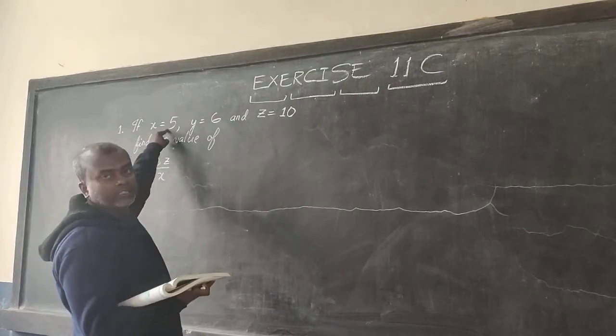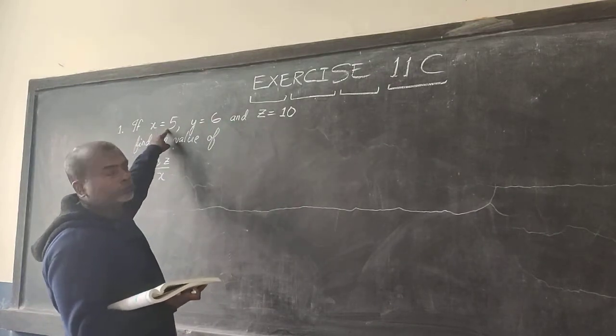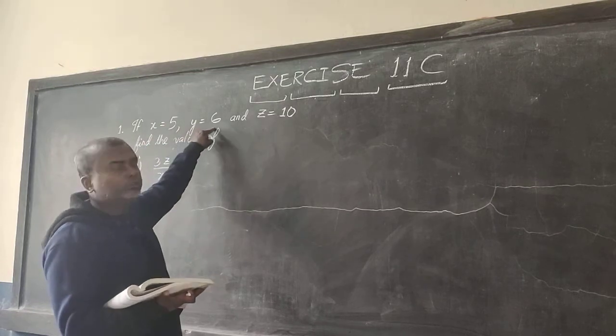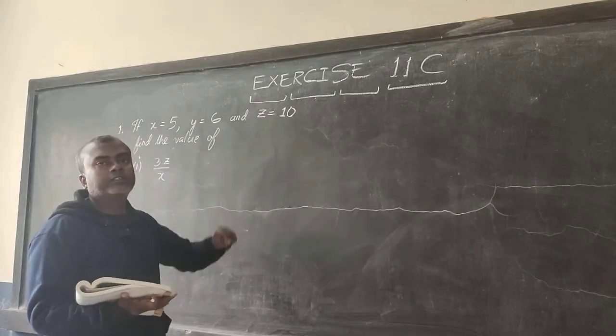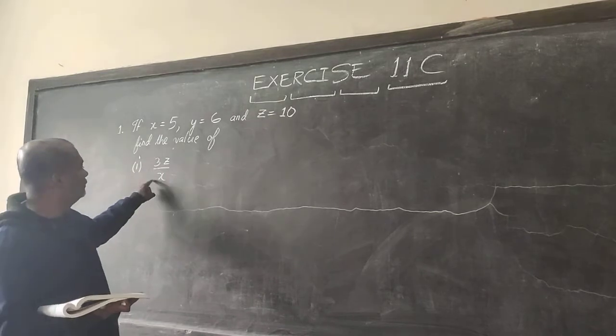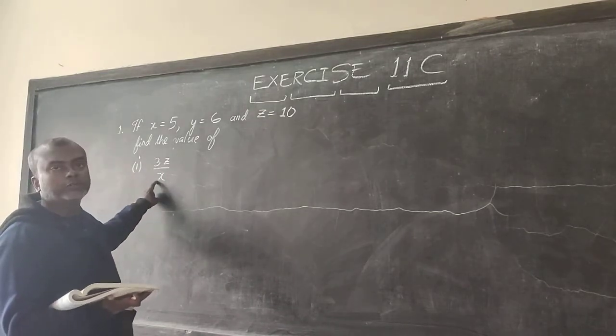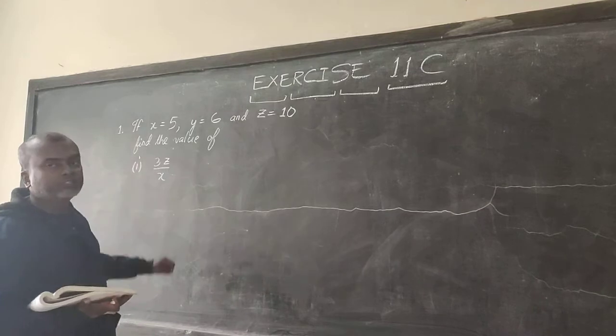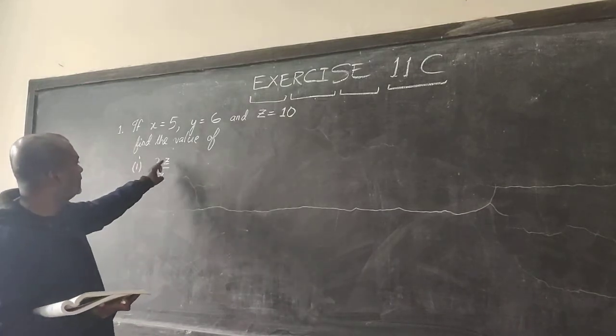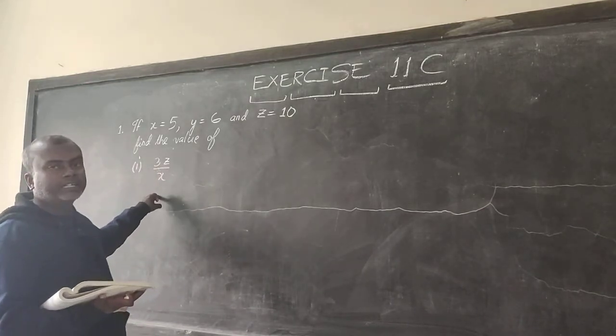X value is assigned. X is equal to 5, Y is equal to 6 and Z is equal to 10. So we have to find the value of this particular algebraic expression. This is an algebraic expression: 3Z divided by X.